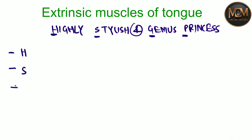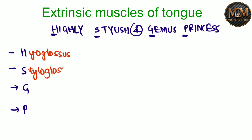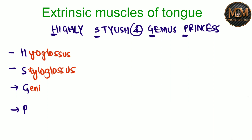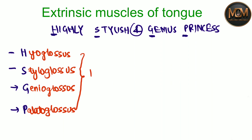From H we have Hyoglossus, from S we have Styloglossus, from G we have Genioglossus. Once you see the suffix '-glossus,' it means it is connected or related to the tongue — so you don't need to worry. From G: Genioglossus. And the last one, from P: Palatoglossus. So these are the extrinsic muscles of the tongue.